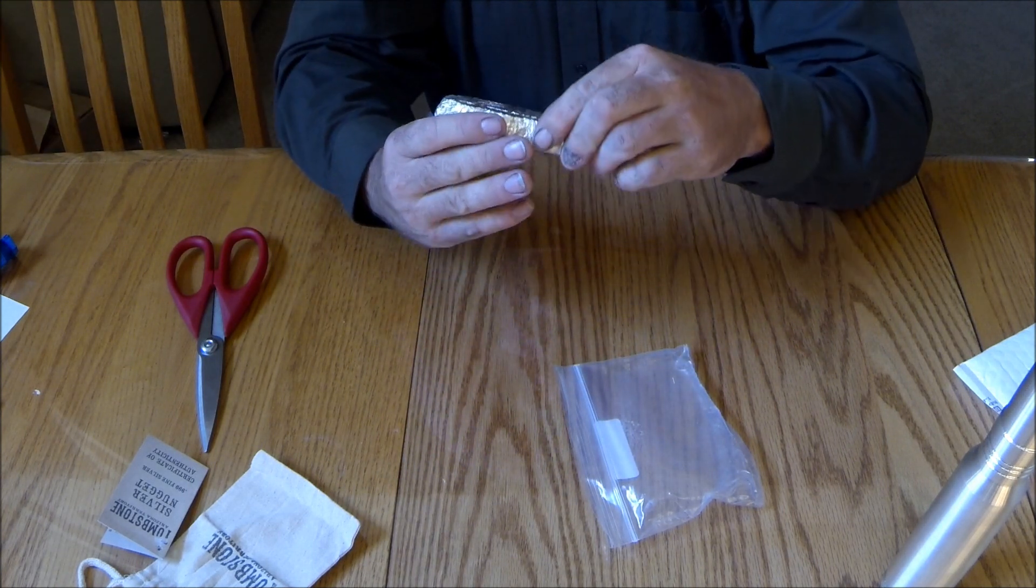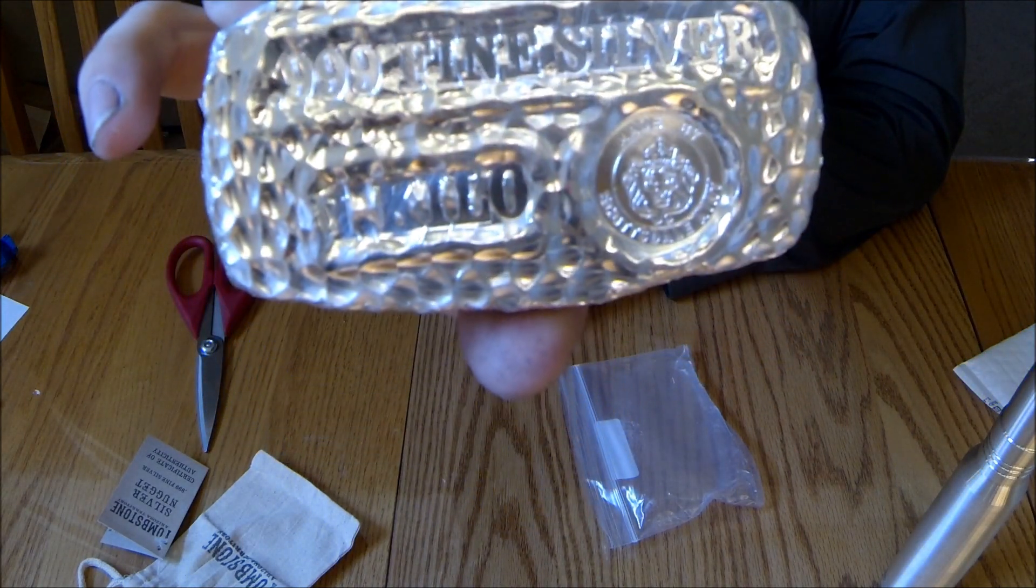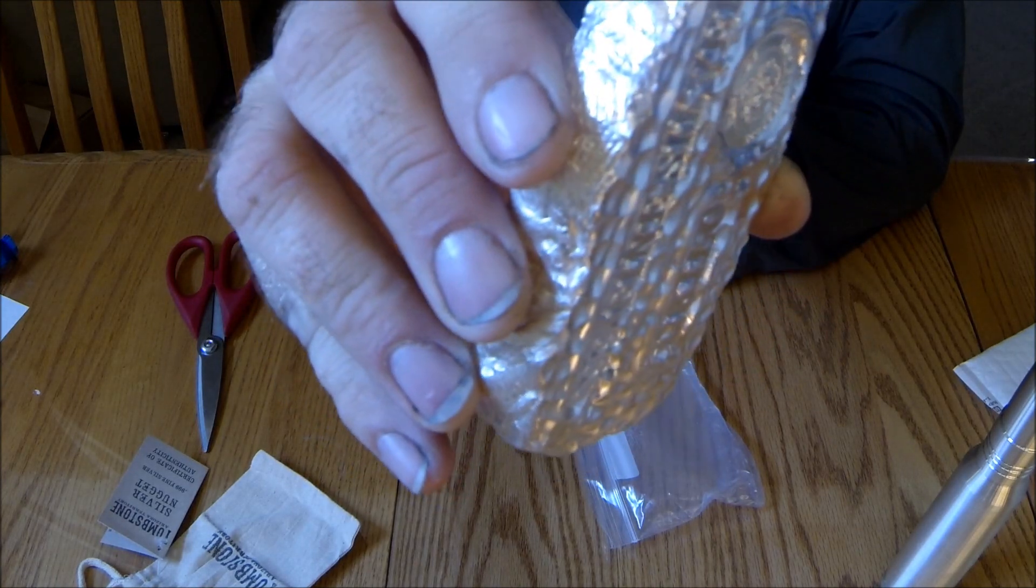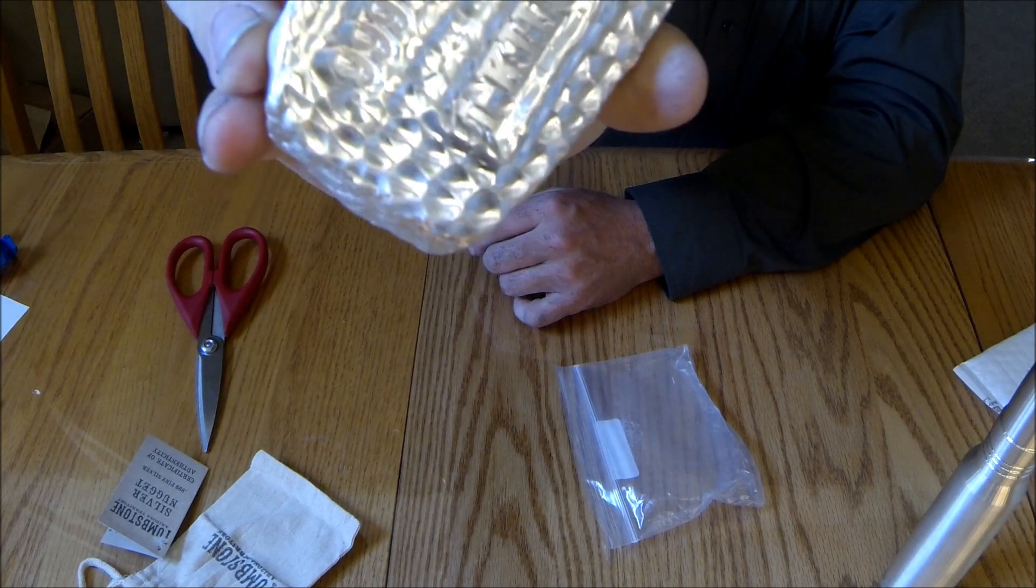Here we go. Kilo silver, 32.15 ounces. Looks like it was just chipped away from the side of a mountain the way they have it shaped.